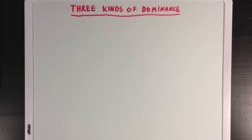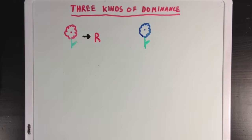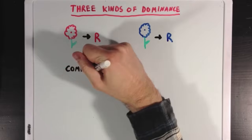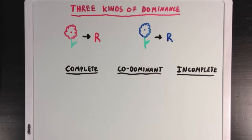To explain this, I'm going to use a different example. Let's say we have this flower, where the red petal phenotype is coded for by the red R allele, and the blue flower phenotype is coded for by the blue R allele. I'm going to introduce three different patterns of dominance: complete dominance, which you've already heard of, codominance, and incomplete dominance.